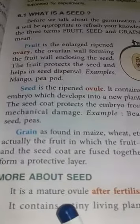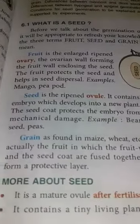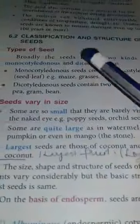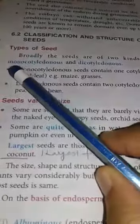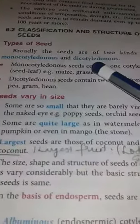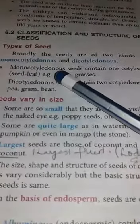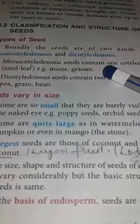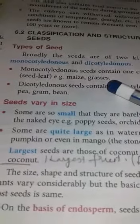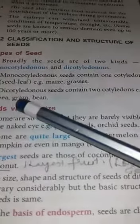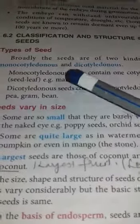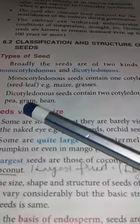The next topic is classification and structure of seeds. Seeds are classified into two categories: monocotyledons and dicotyledons. Monocotyledon — mono means single — refers to seeds that contain one cotyledon, for example maize and grasses. Dicotyledon — di means two — refers to seeds in which two cotyledons are present.